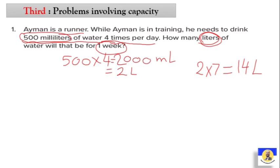Important reminder: always read the question carefully. Note what unit the numbers are given in and what unit the answer is required in. Here, Ayman drinks 500 milliliters four times per day. We multiplied to get the daily total, converted to liters, then found the weekly total.